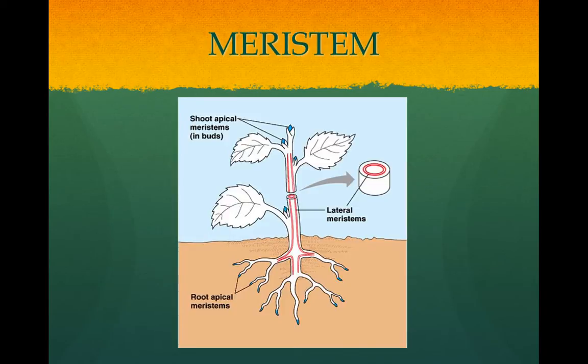Meristem is the growth tissue. It has localized, unspecialized cells. Apical meristems are at the tips of roots and the terminal and axial buds. They produce new cells that elongate the plant. Apical meristems cause primary growth, which is lengthwise growth. The root cap protects the tip of the root, which is the apical meristem. Cell division and cell lengthening help the roots to grow. In roots, the cells of the vascular cylinder differentiate into primary xylem and phloem.